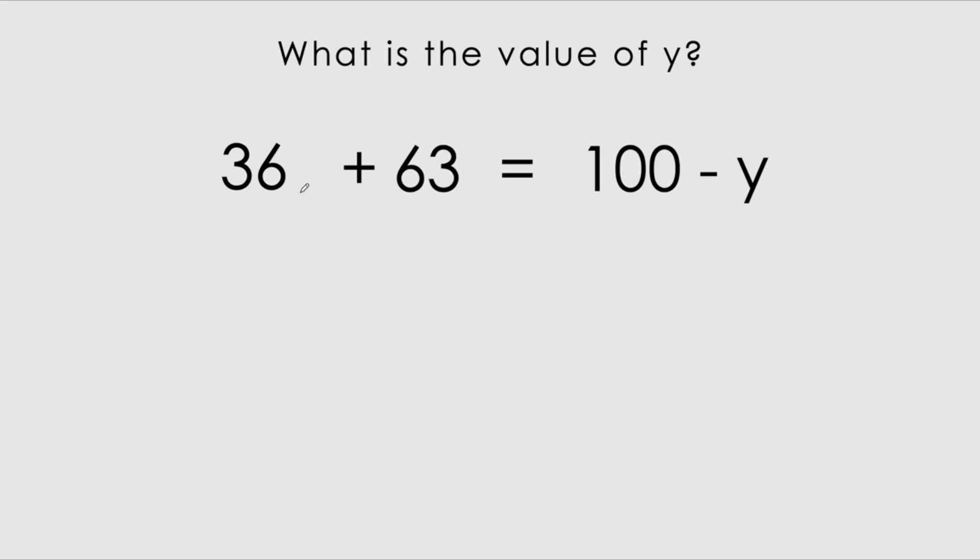So now we've got 36 plus 63 is equals to 100 minus y. Let's work this out first. So 36 plus 63 gives us 99 equals to 100 minus y. So a quick trick here is if I'm going to move this to the left hand side, because it's a negative, if I move it across the equal sign, this negative sign actually becomes positive. So this becomes positive y.